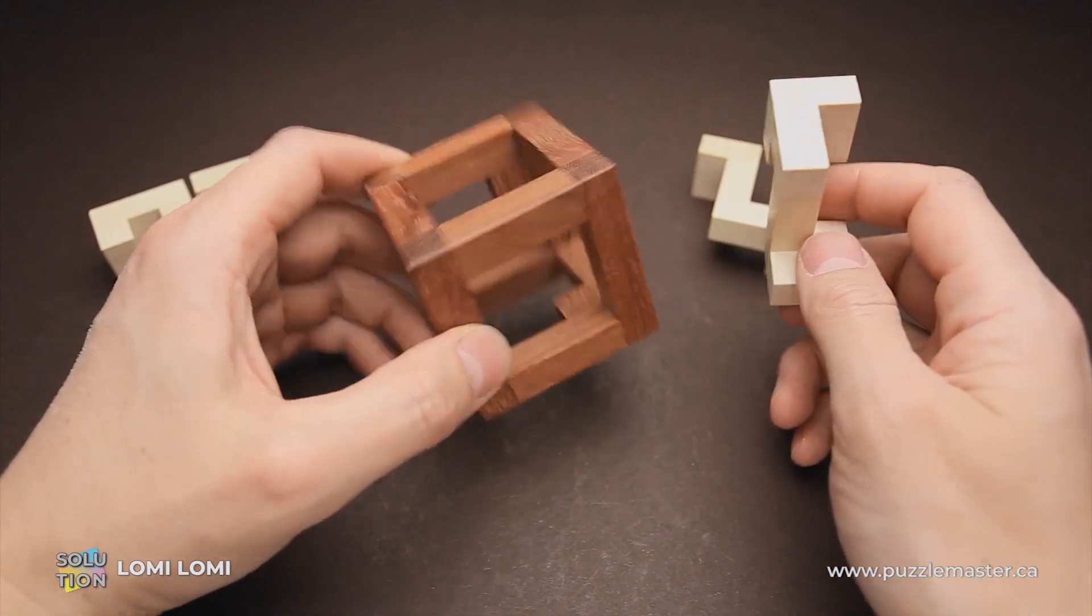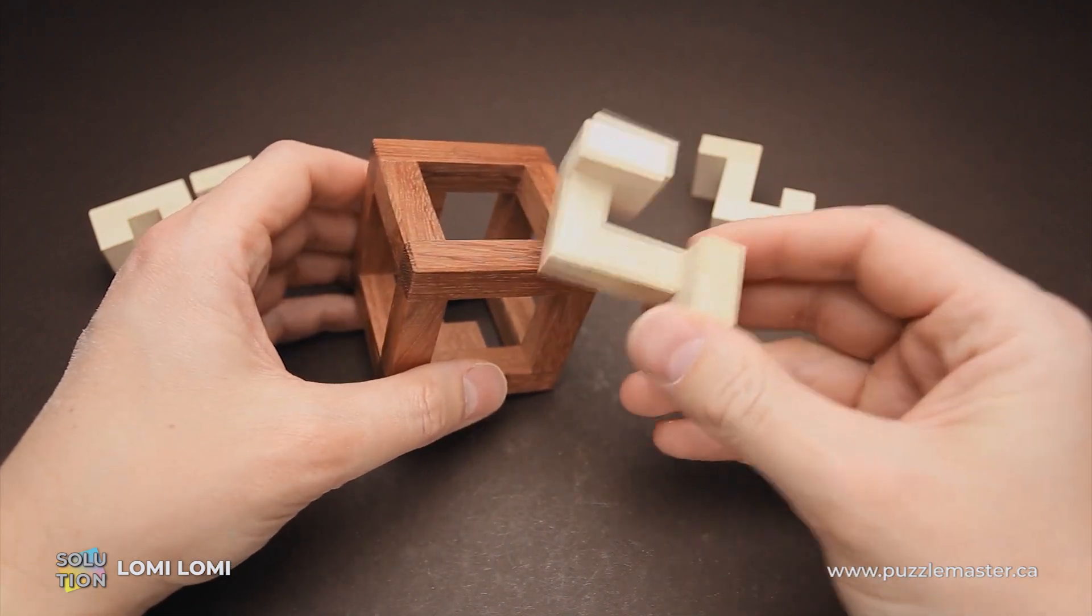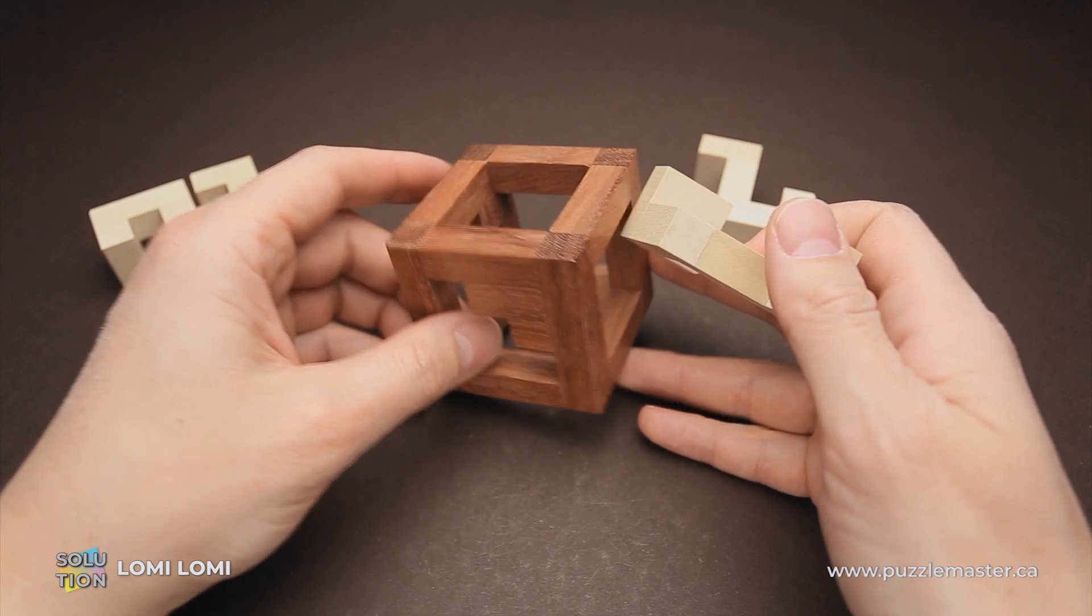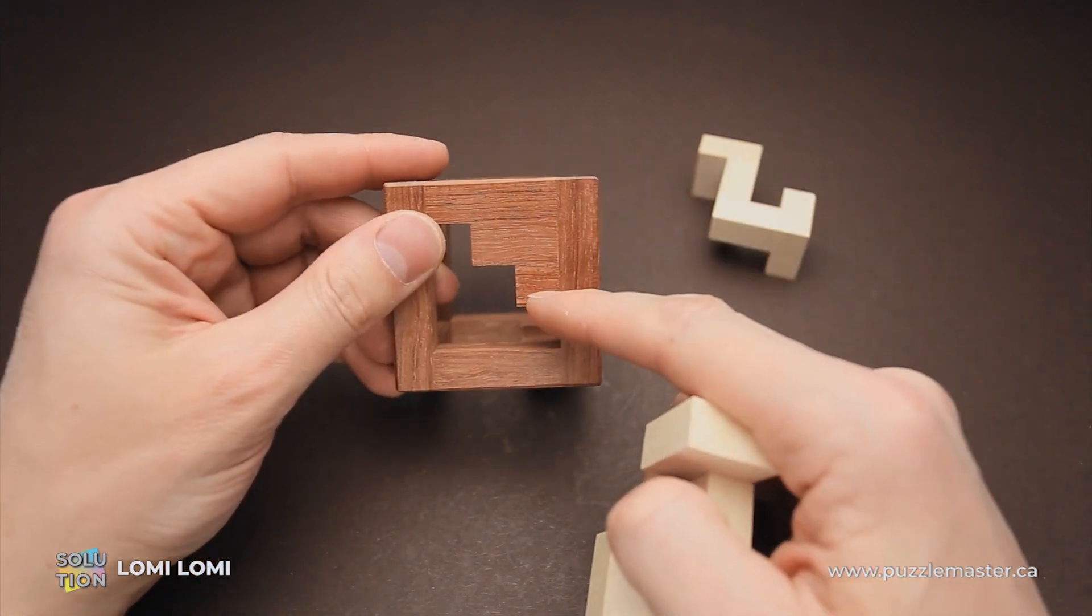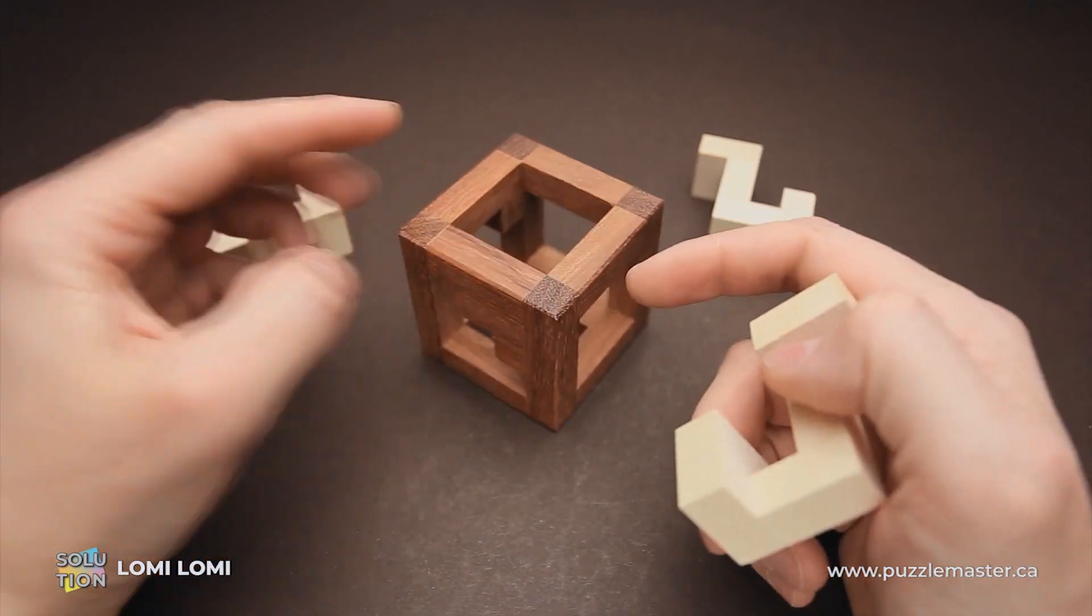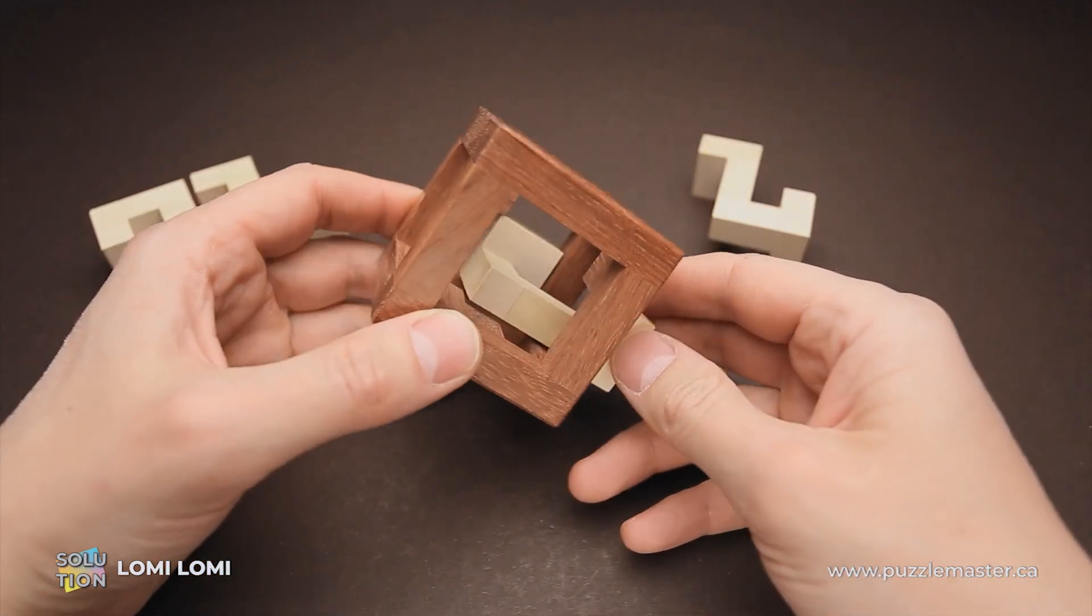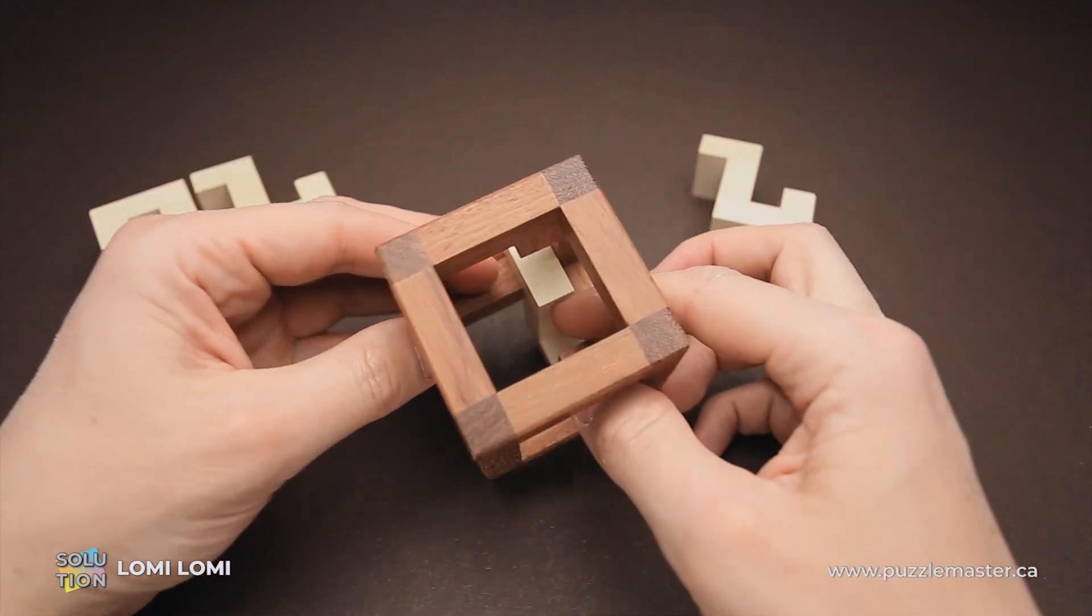And now I will show you how to solve it. So you grab one of the parts. First of all, you face the frame with the three voxel restriction facing this direction. Then you grab one of the parts, put it from the bottom, and keep it in this corner.